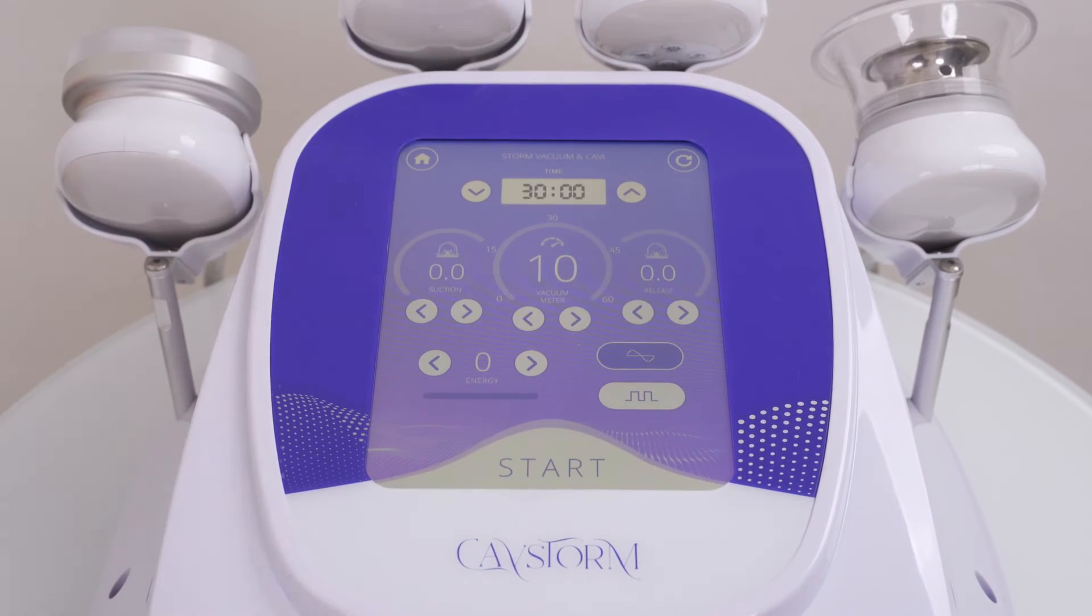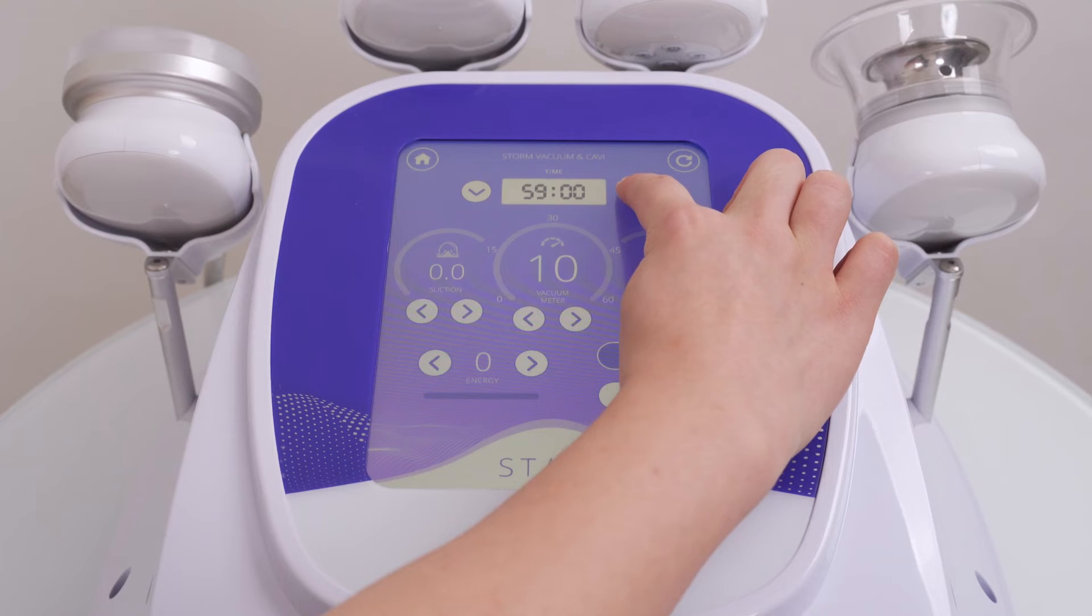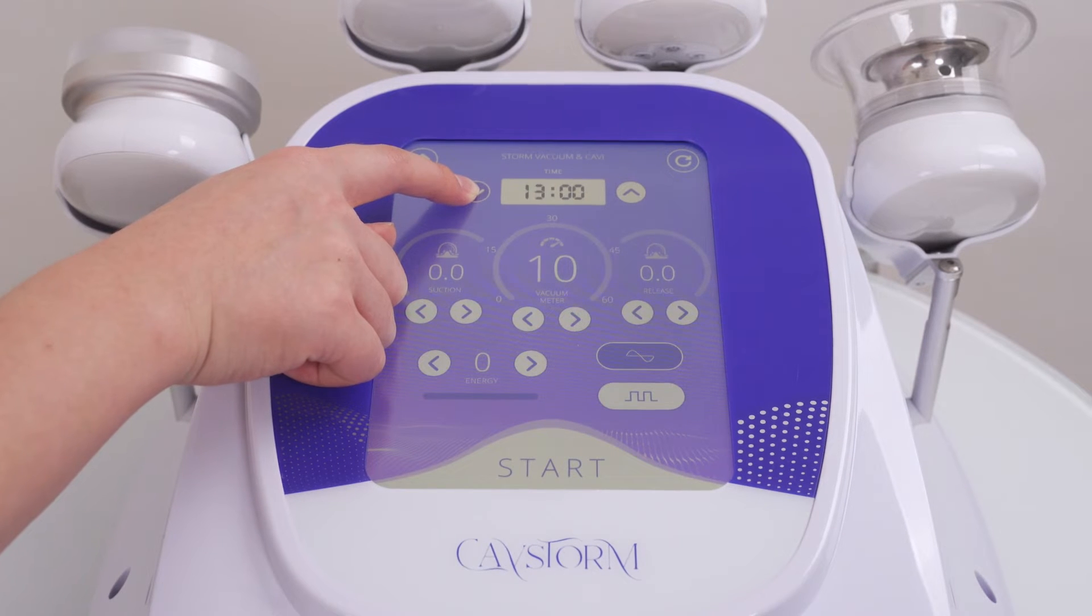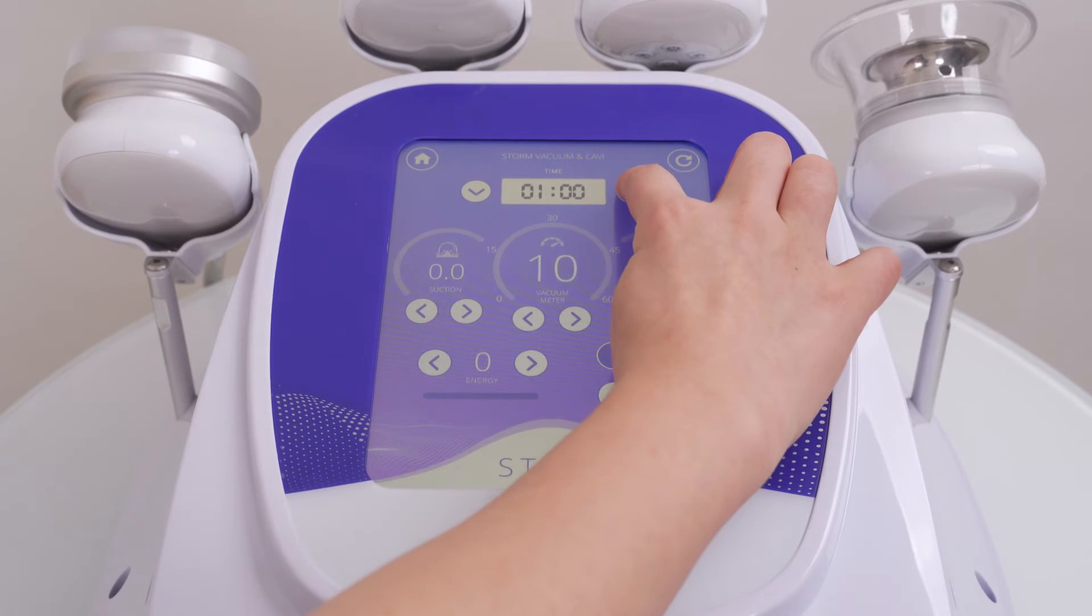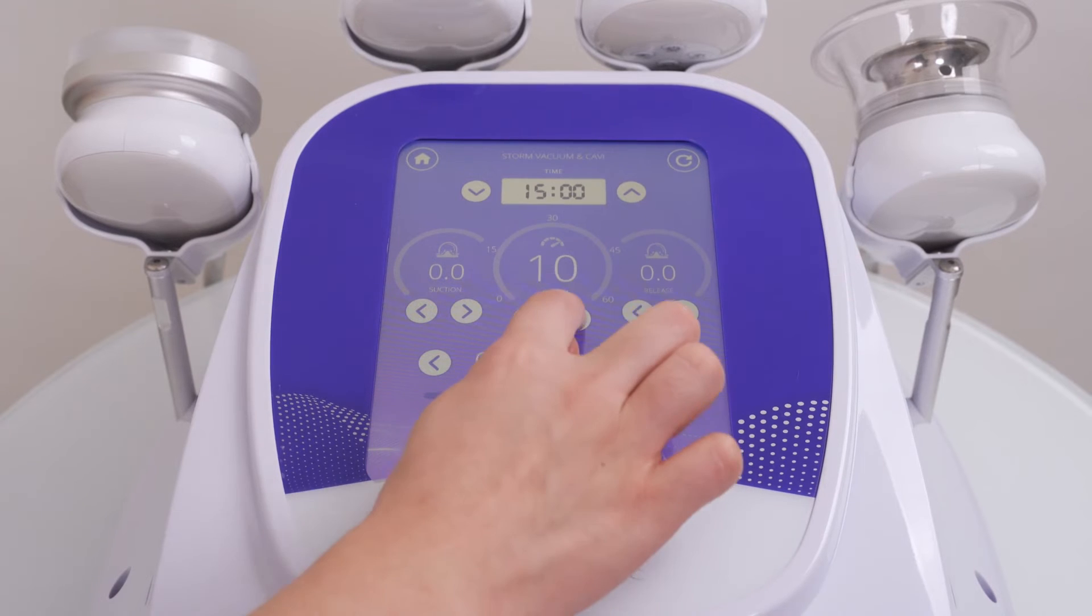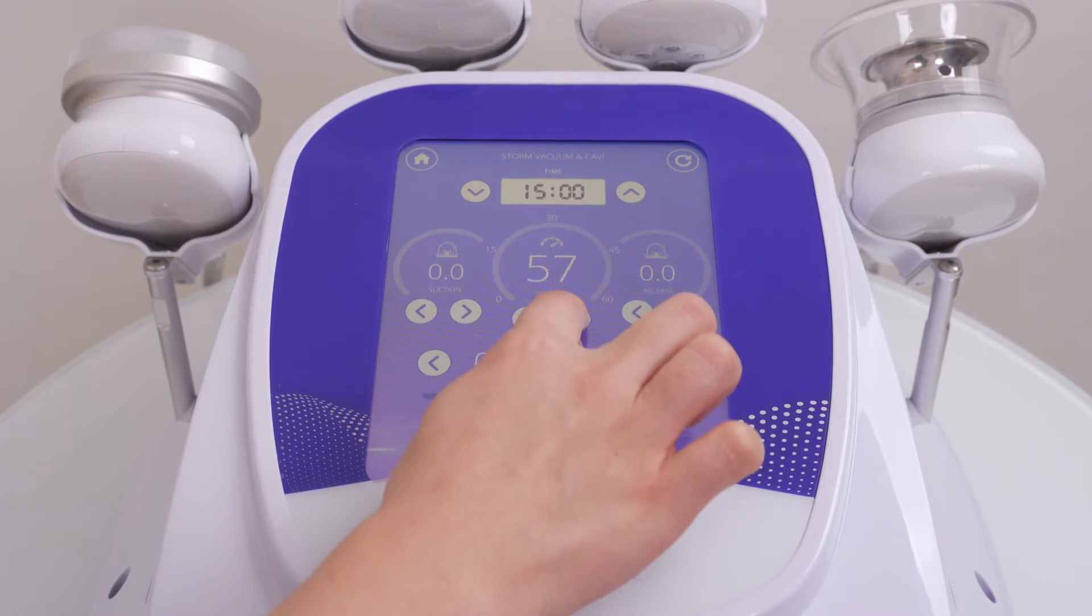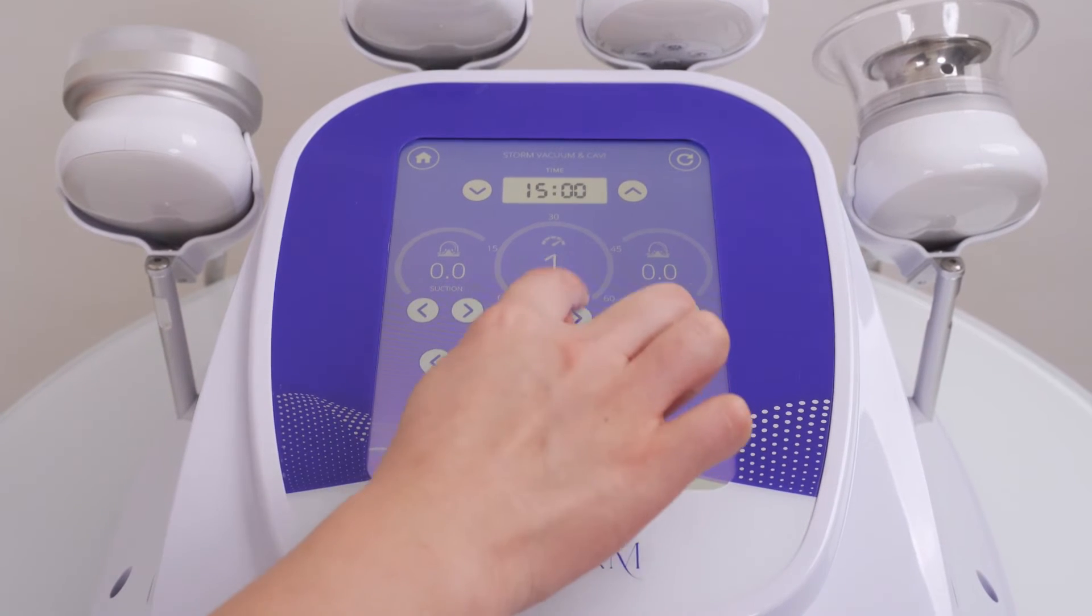Press the Storm vacuum and cavity function button and set parameters. Time range is 0 to 60, with 15 minutes per area recommended. Suction range is 0 to 60. Adjust according to individual endurance.